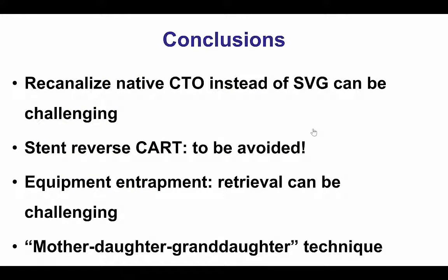This case has several lessons. The first is that although recanalizing native occlusions instead of a repeatedly failing vein graft is an appealing treatment option, it can be very challenging in patients with calcified vessels and comorbidities such as heart failure and CKD. The second is that performing stent reverse CART should be avoided because it may be very hard to cross through the stent, the wire may cross through the sides of the stent, and equipment may become entrapped and fractured.